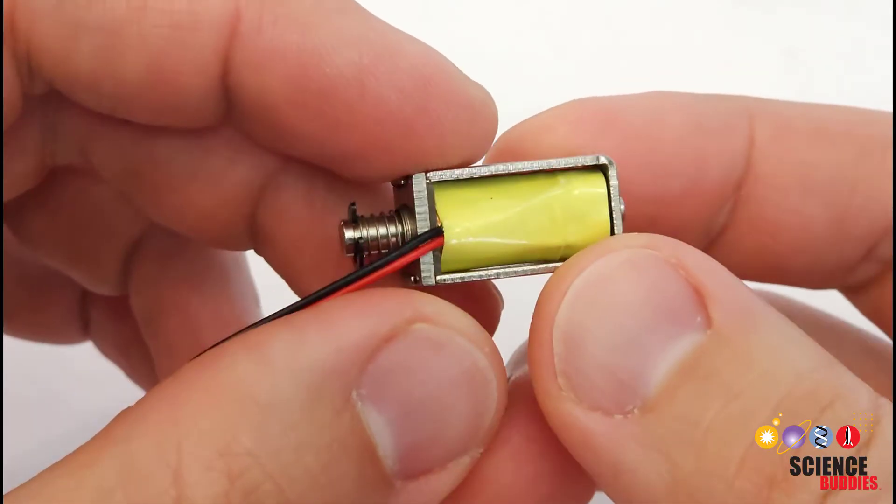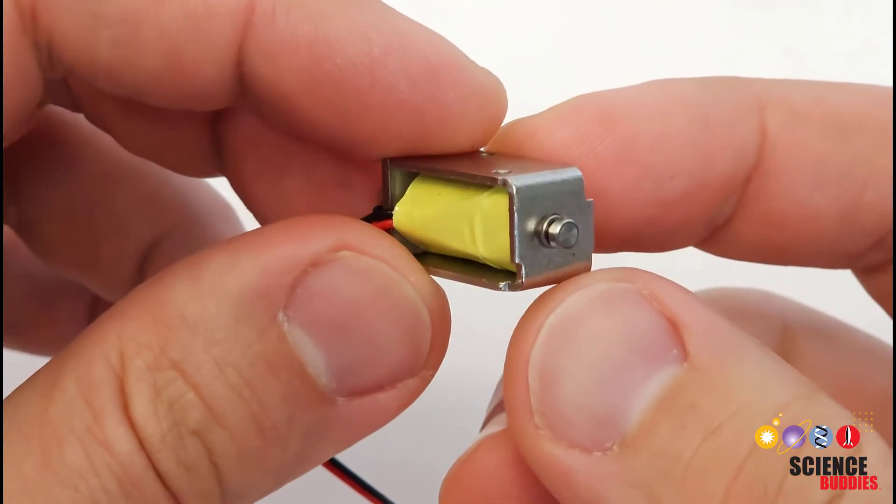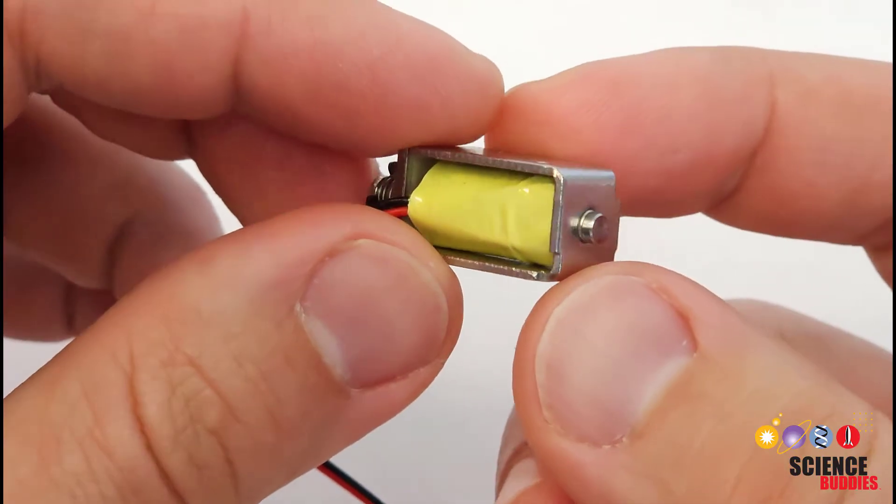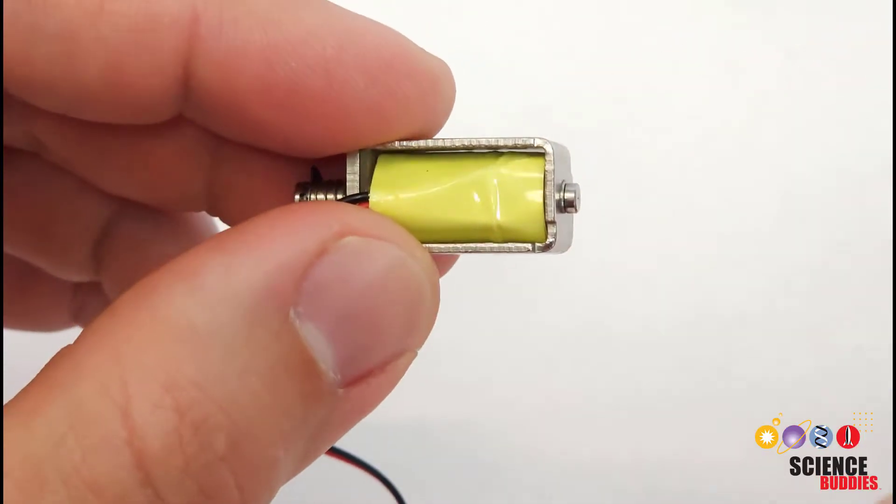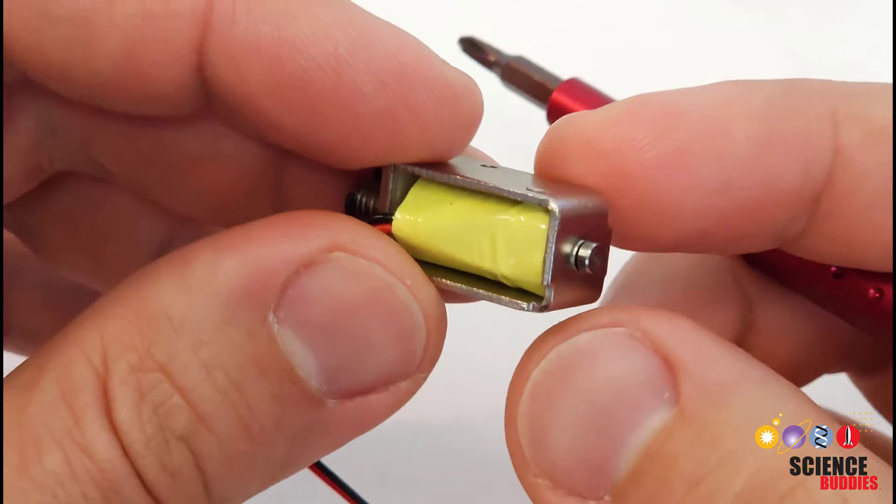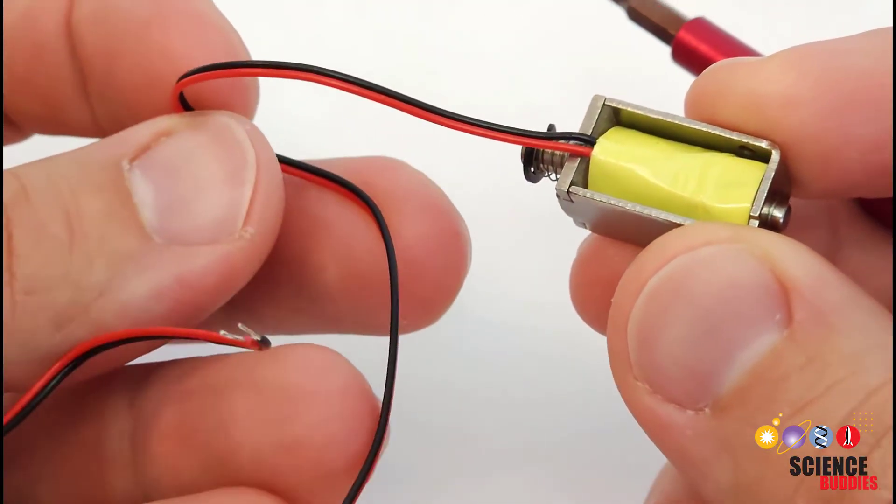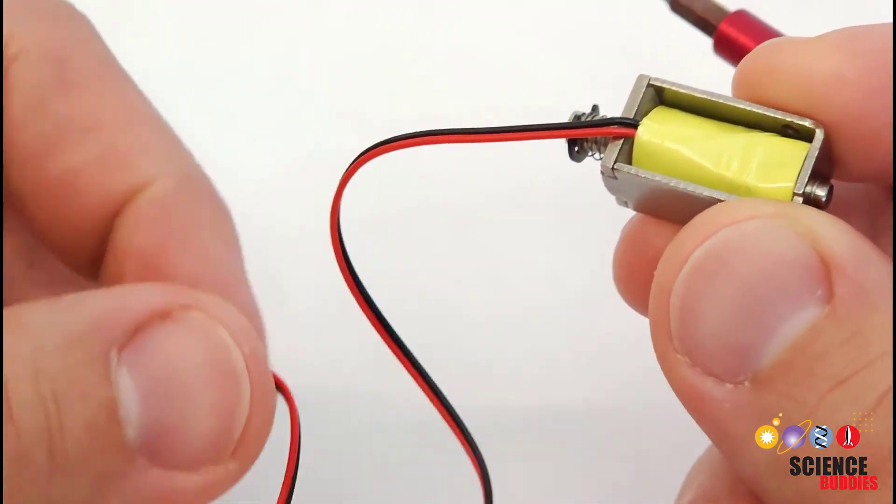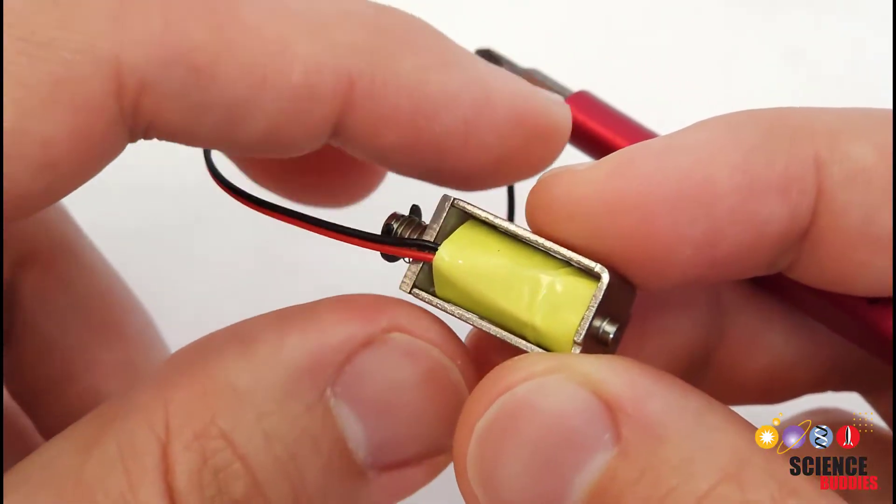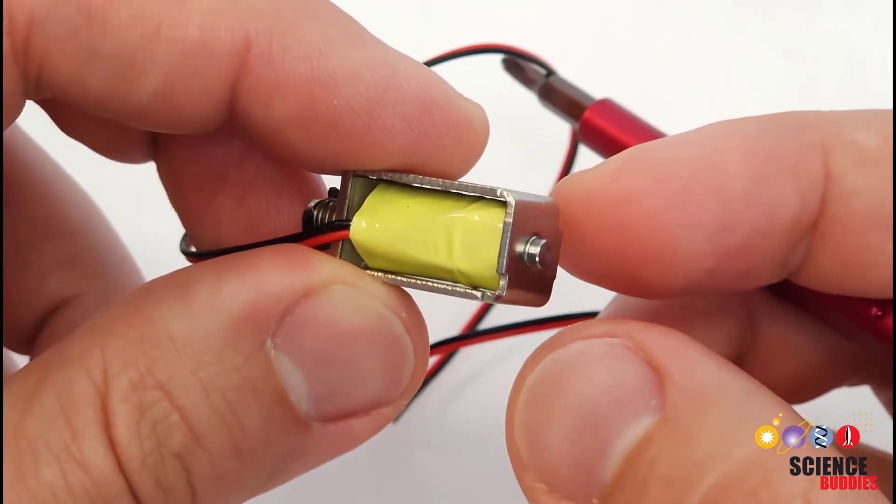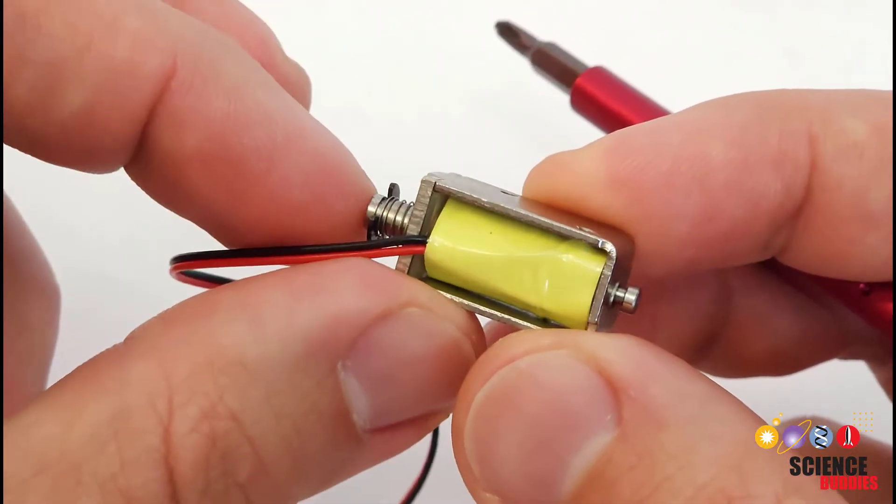Let's start by taking a closer look at a solenoid. A solenoid is really just an electromagnet with a movable core. Inside this yellow wrapper here, there is a coil of wire connected to these two external leads. When I connect these leads to power and send current through that wire, it generates a magnetic field and causes the core to move.